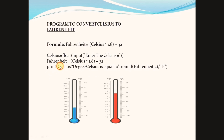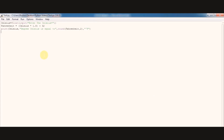The third line is the print statement. It prints the Celsius value we entered, followed by the string 'degree Celsius is equal to'. The round function is used to round the output to two decimal digits, and the last part is also a string — the unit of Fahrenheit.